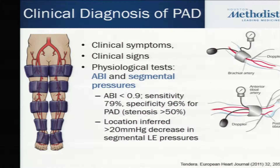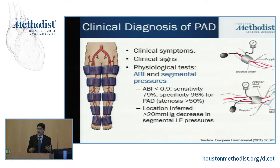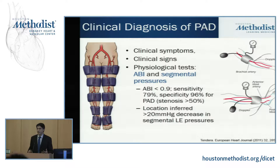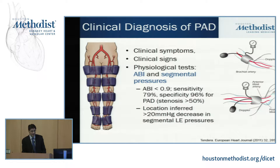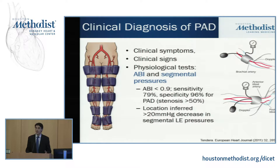You may palpate their pulses and notice a reduction in pulses in one extremity versus the other. Then you're normally ordering a simple physiological test done in many physicians' offices — something like an ankle brachial index, which is a ratio of pressures at the ankle compared to those at the brachial artery. A number less than 0.9 is extremely sensitive and specific for making the diagnosis of peripheral arterial disease. You can also add a series of blood pressure cuffs — segmental pressures — and wherever you see a drop of about 20 mmHg, you can localize the stenosis.